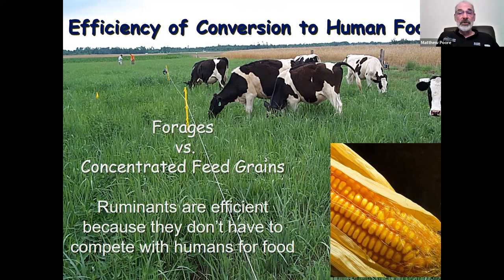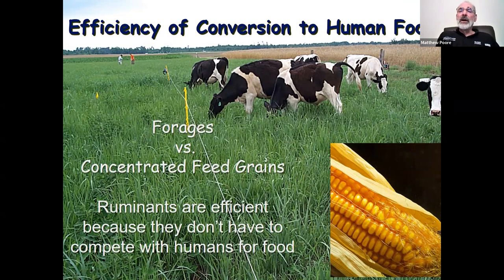A large part of the land on the earth's surface cannot be farmed with conventional farming techniques — it's either too steep, too rocky, or too dry — but we can grow forages there, and ruminant animals are a key part of that. Looking to the future, this is going to become a more and more important topic as we try to get those ecosystem benefits from forages and pastures while continuing to efficiently produce high quality food for the human population.